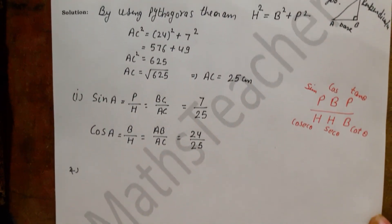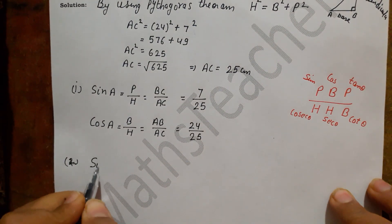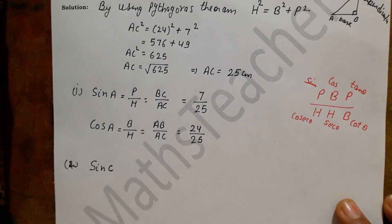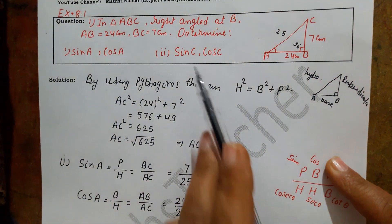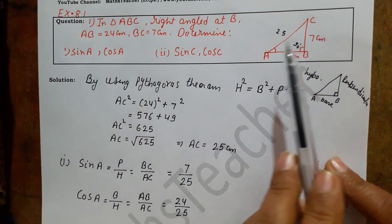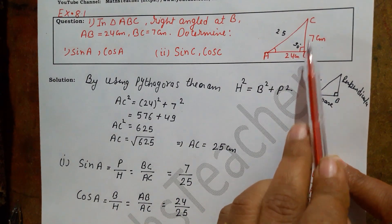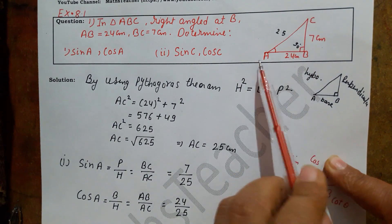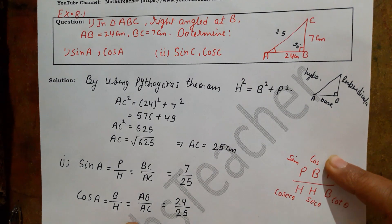Now for the second part we have to find sin C and cos C. Here we go to the figure. Now we have to find sin C, but angle C is not at the base in this triangle. So what will we do? We will change this triangle — we will make BC the base and draw AB as the perpendicular, because the angle whose value we need to find must always be on the base.